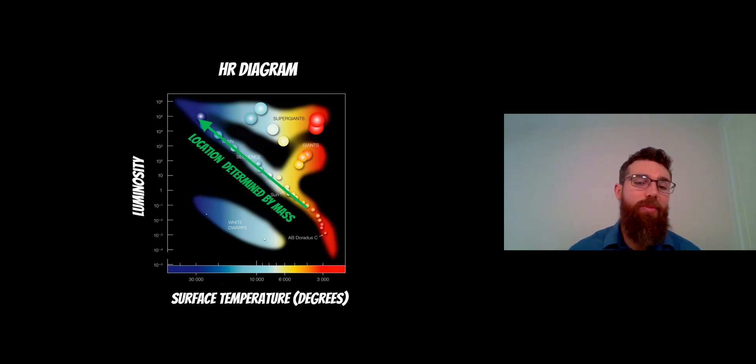So the lower mass stars, a bit like the sun, red dwarfs, are down towards the lower right and your more massive stars are on the upper left. So the bigger the star, the higher the luminosity.